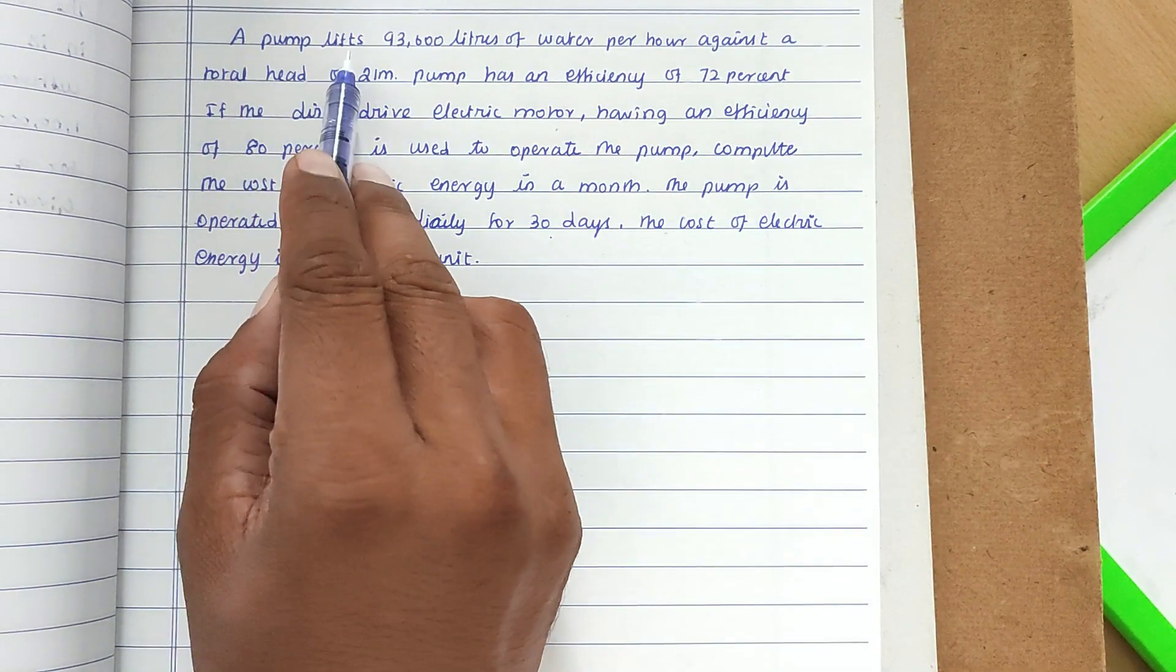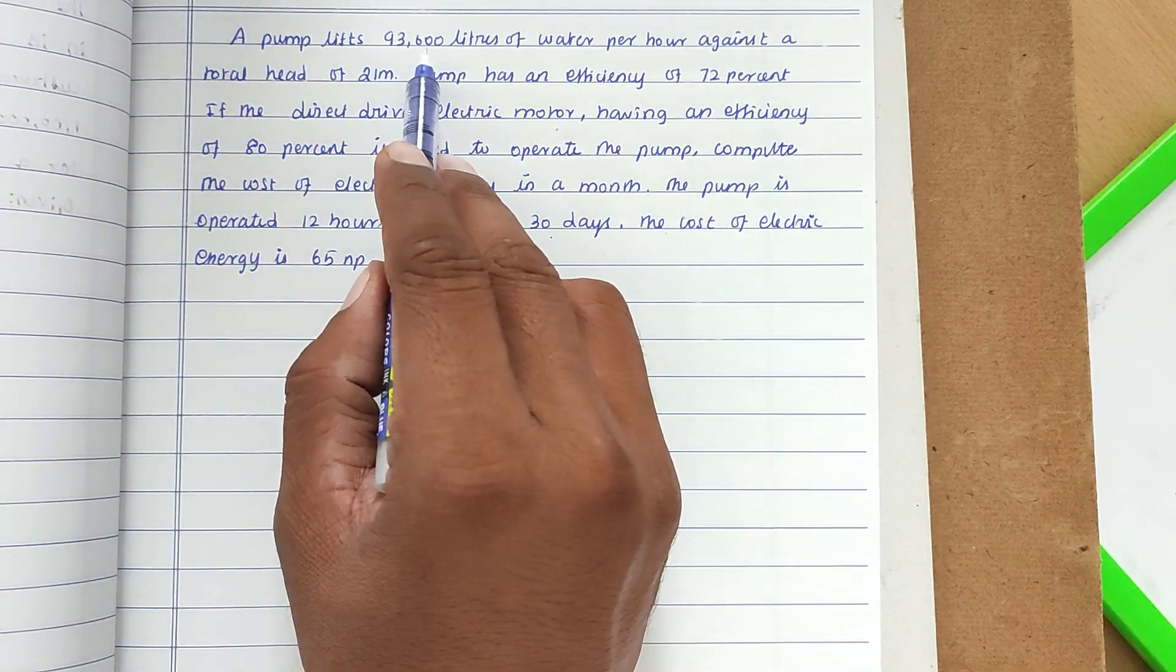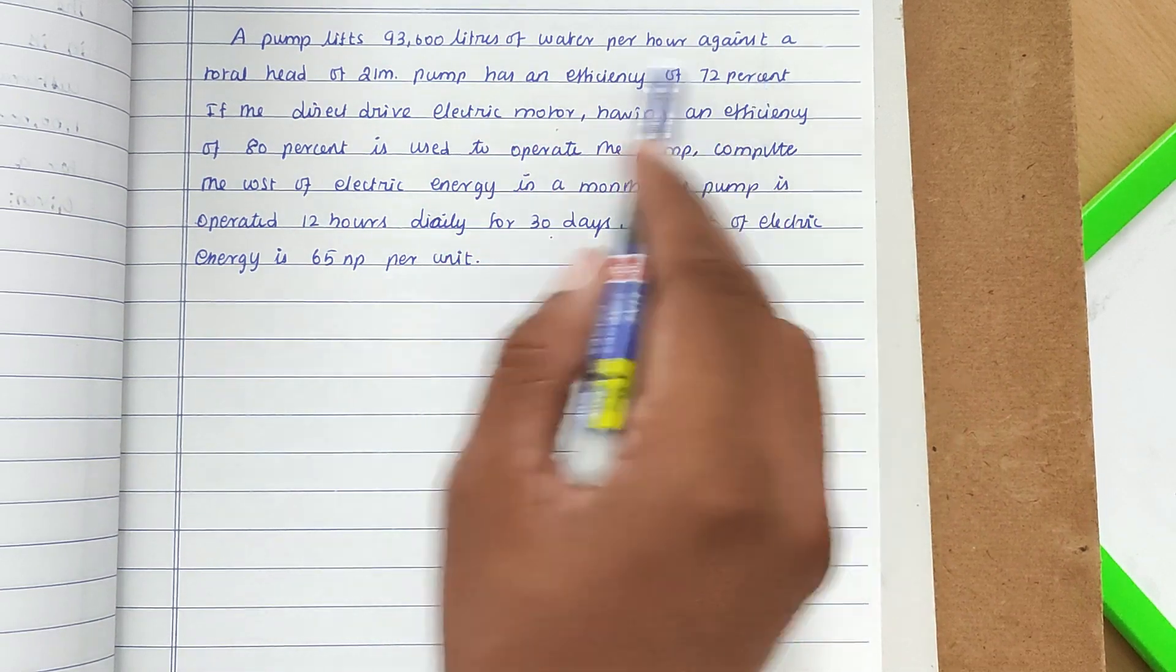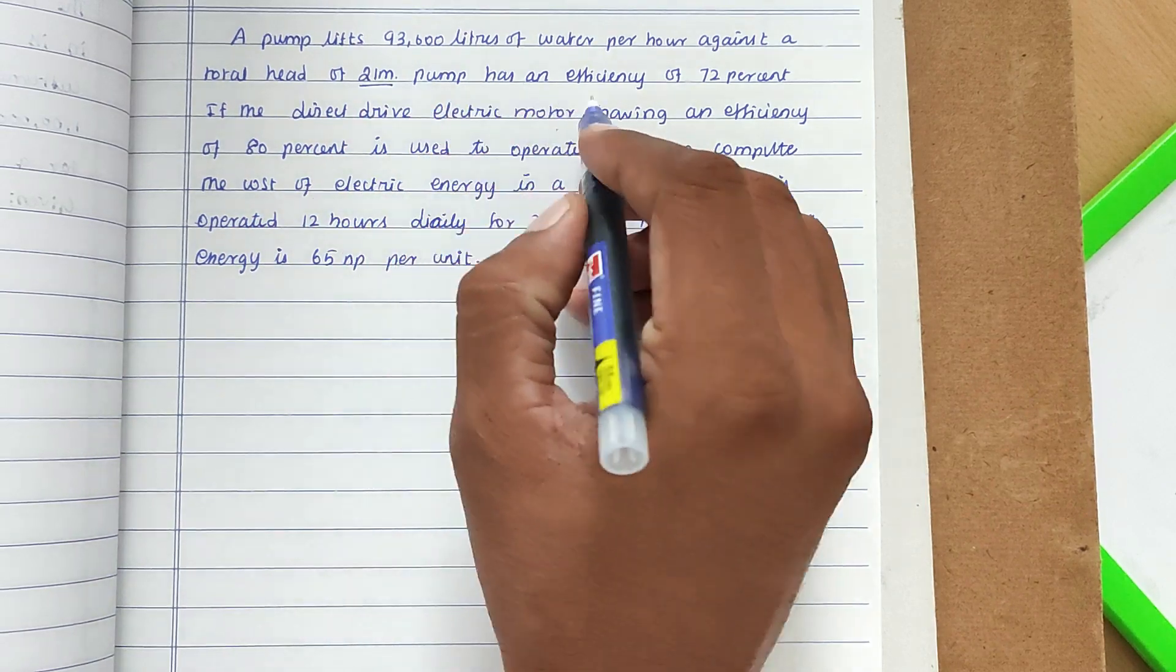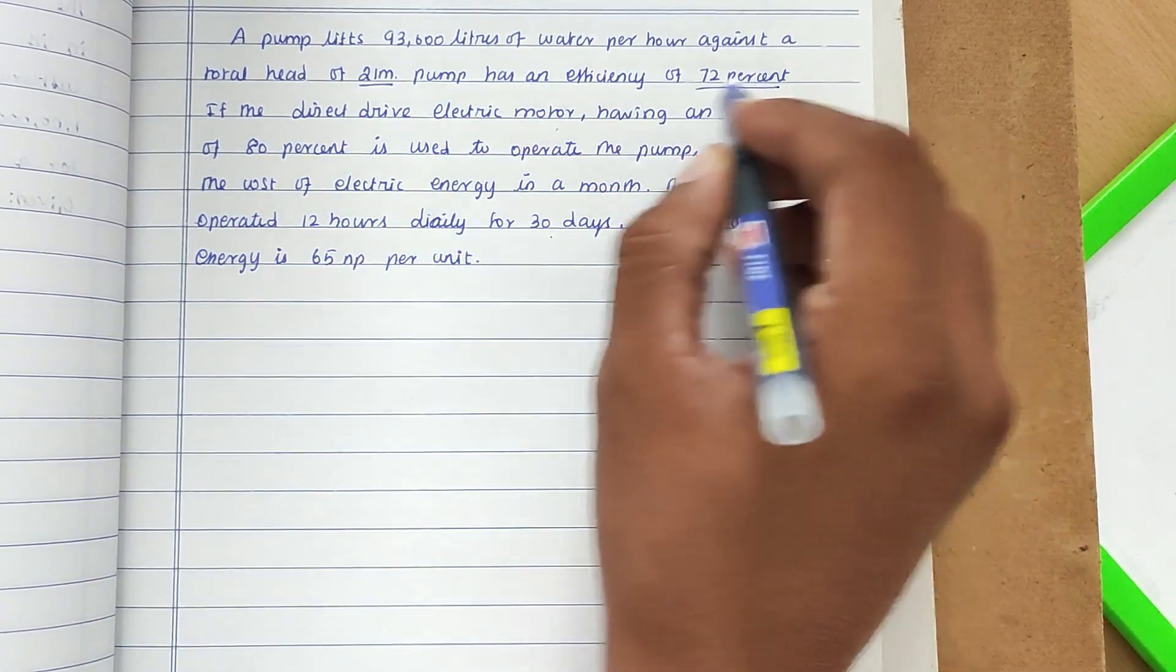The problem is: a pump lifts 93,600 liters of water per hour against a total head of 21 meters. The pump has an efficiency of 72 percent.